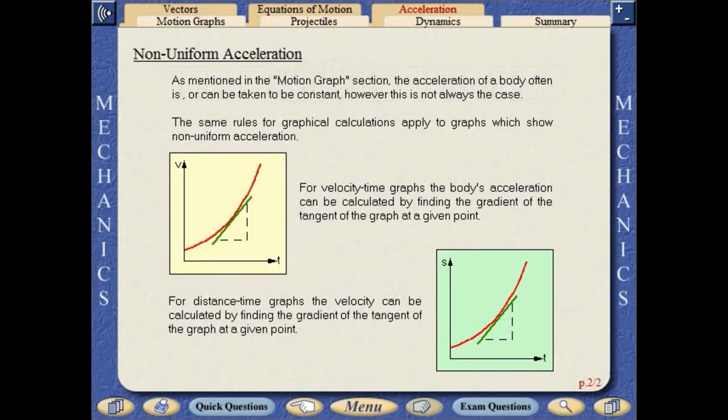For velocity-time graphs, the body's acceleration can be calculated by finding the gradient of the tangent of the graph at a given point. For distance-time graphs, the velocity can be calculated by finding the gradient of the tangent of the graph at a given point.